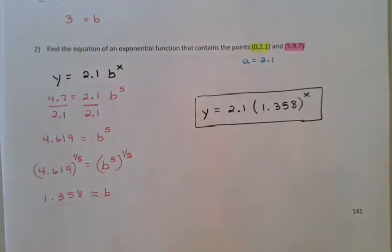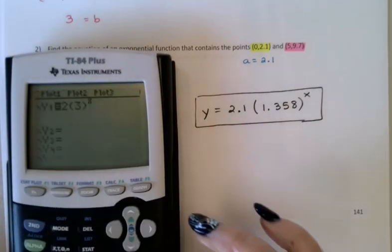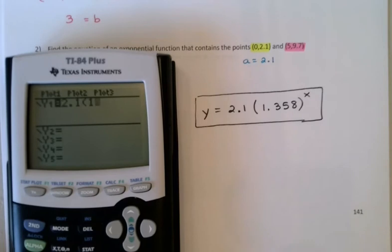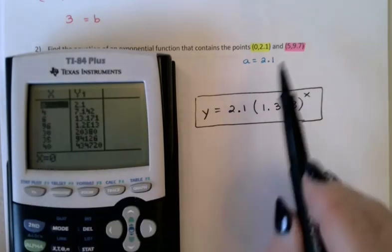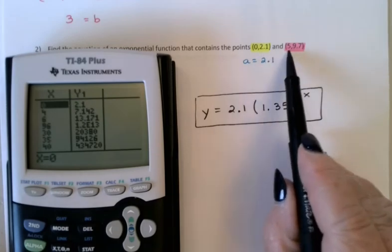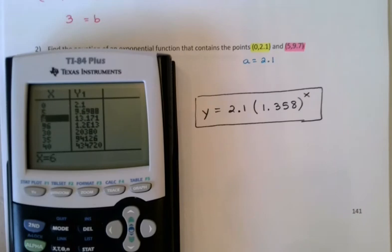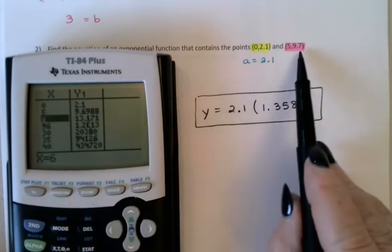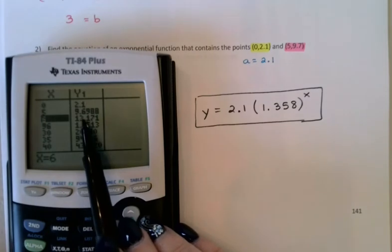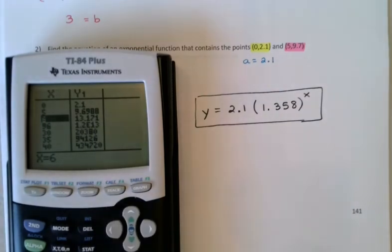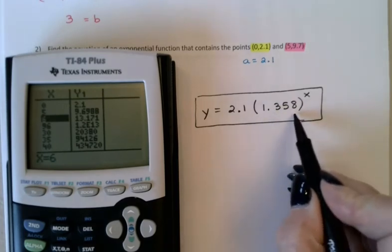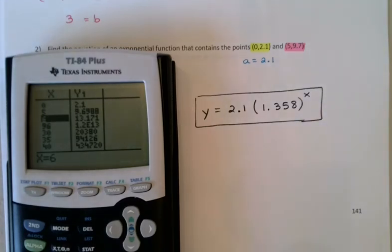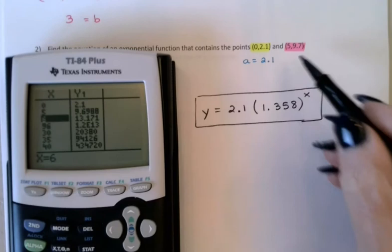Let's go to the calculator and double check this one as well. I'll type in the function that we just found. And then go to the table. There's that (0, 2.1), which I expected. And then I want to check and see what happens when x is 5. Now you'll notice I don't quite get exactly 9.7. I have 9.6988. The reason for that is we've got some round off error going on. Again, this base wasn't exactly 1.358. There were more decimal places that we didn't write down. So it's not surprising that there will be a little bit of round off error in that calculation as well.